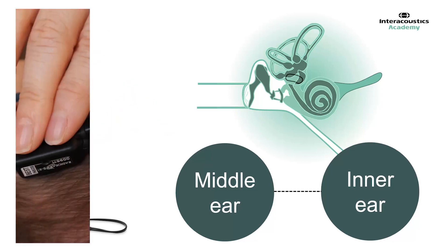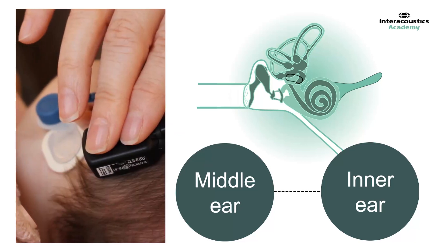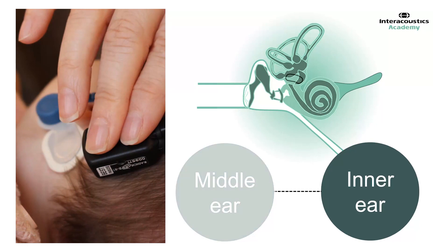By performing bone conduction ABR testing, it is possible to bypass the middle ear and isolate the inner ear and record threshold information about the underlying sensorineural function.